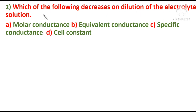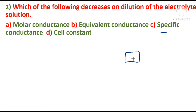Read the next question: which of the following decreases on dilution of the electrolytic solution? We are diluting the electrolytic solution and asked which parameter decreases — molar conductance, equivalent conductance, specific conductance, or cell constant. Specific conductance decreases because it depends on the number of ions present in unit volume. On dilution, ions per unit volume decrease, so specific conductance decreases. Option C is correct.